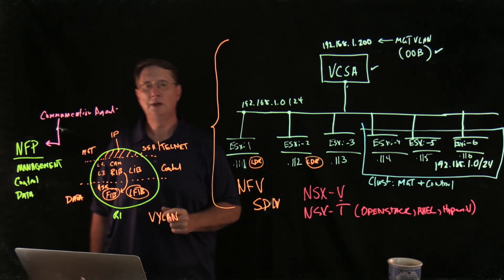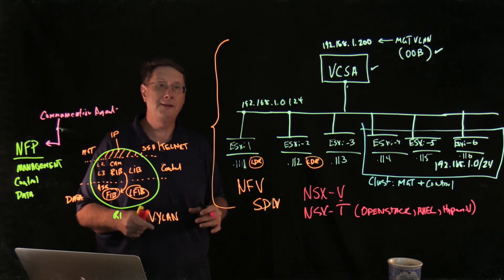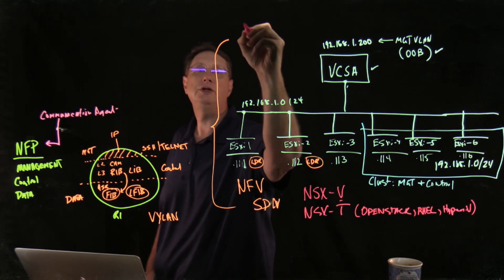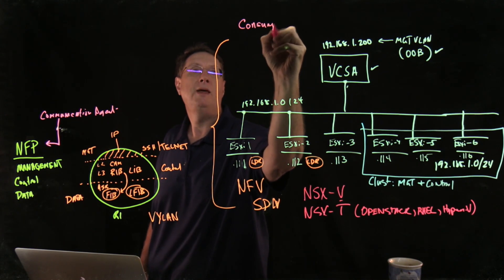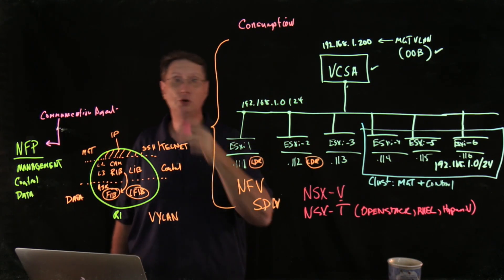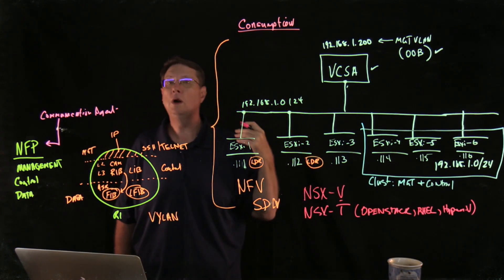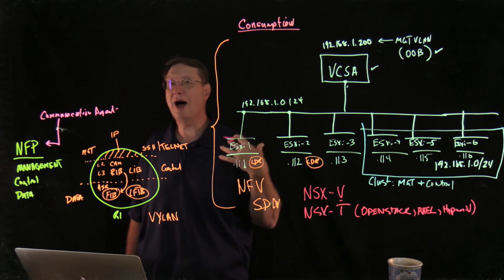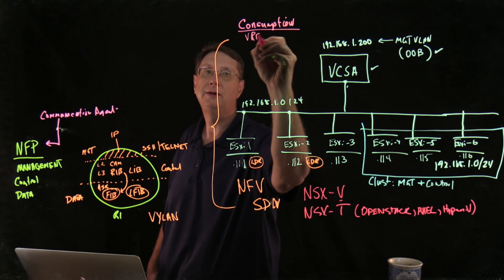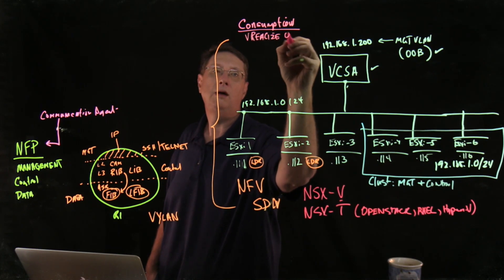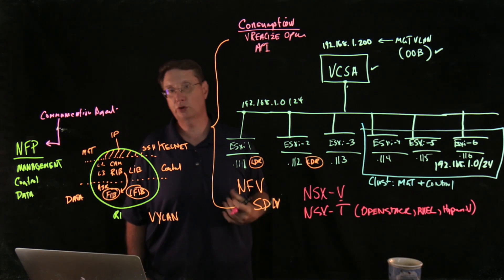And we'll talk about those. It's also important to understand that there is a third layer. There is a third plane, and that plane is actually going to be referred to as the consumption plane. So how are the services going to be consumed by users or consumed in the form of deployable services by administrators like us? As an example, I could use something like vRealize. I could use the API to consume or to deploy these services.